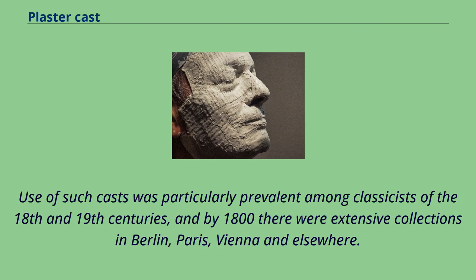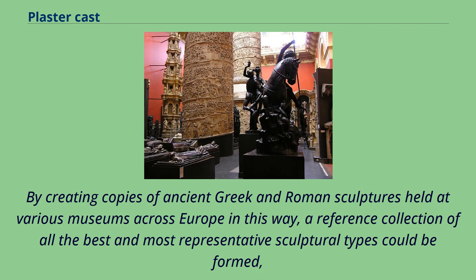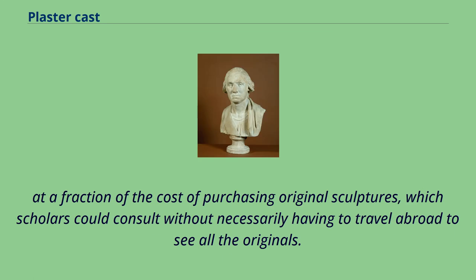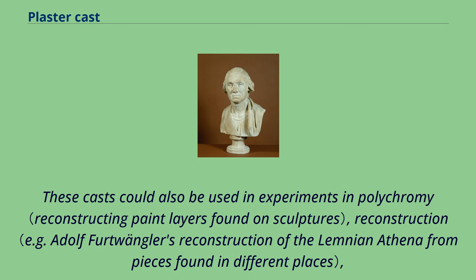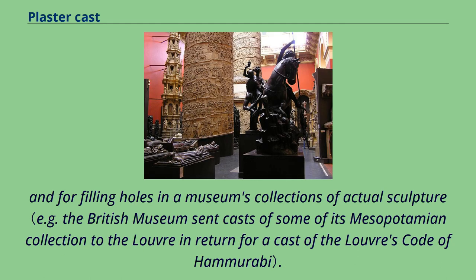Use of such casts was particularly prevalent among classicists of the 18th and 19th centuries, and by 1800 there were extensive collections in Berlin, Paris, Vienna, and elsewhere. By creating copies of ancient Greek and Roman sculptures held at various museums across Europe, a reference collection of all the best and most representative sculptural types could be formed at a fraction of the cost of purchasing original sculptures, which scholars could consult without necessarily having to travel abroad to see all the originals. These casts could also be used in experiments in polychromy, reconstruction, and for filling holes in a museum's collections of actual sculpture.